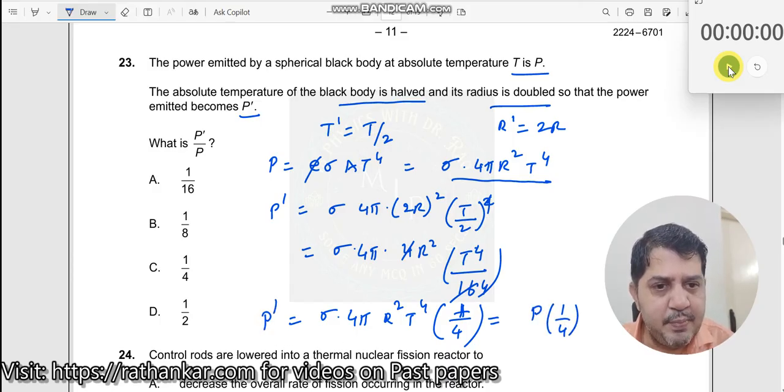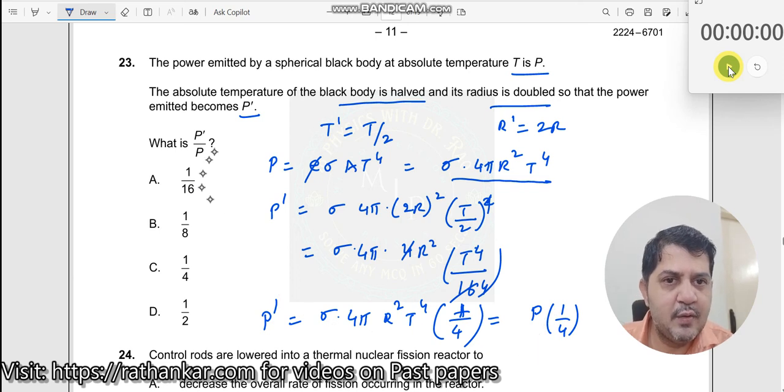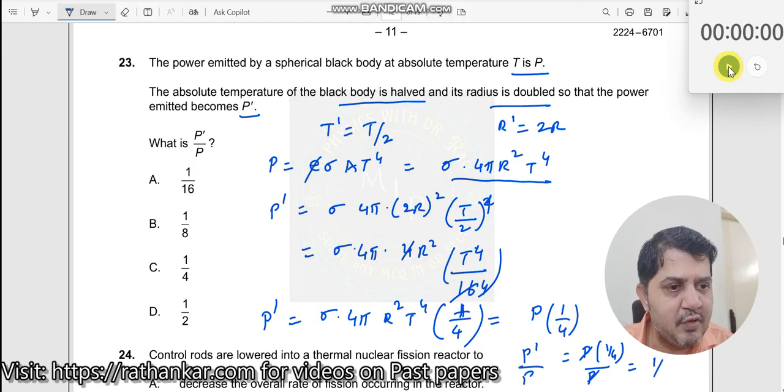What have you got? P' equals P times 1 by 4. What do we need? P' by P. So P' by P equals P times 1 by 4 divided by P. The answer is 1 by 4. Answer is C.